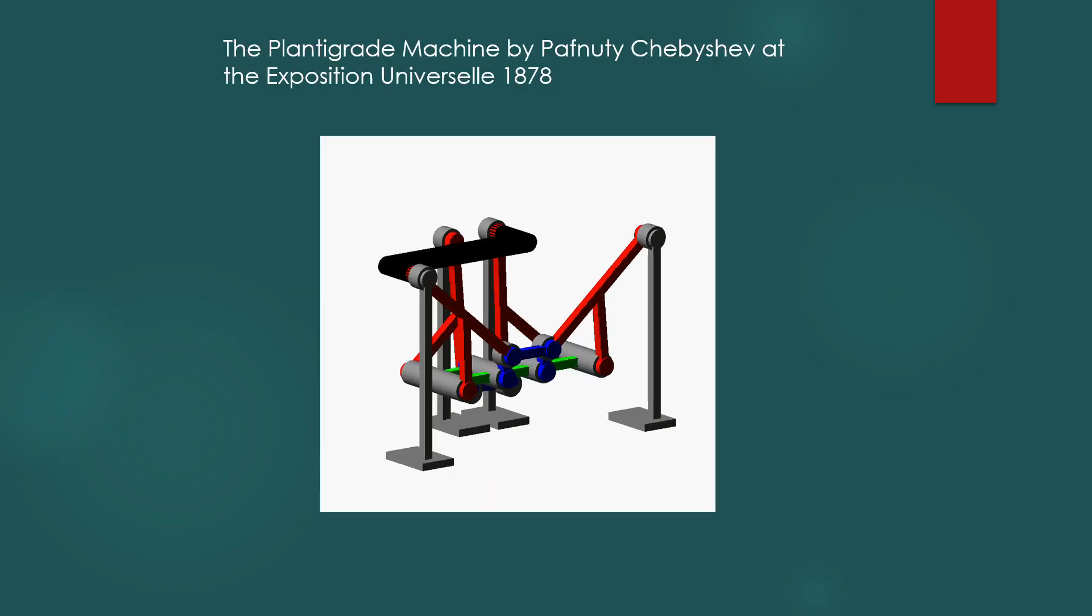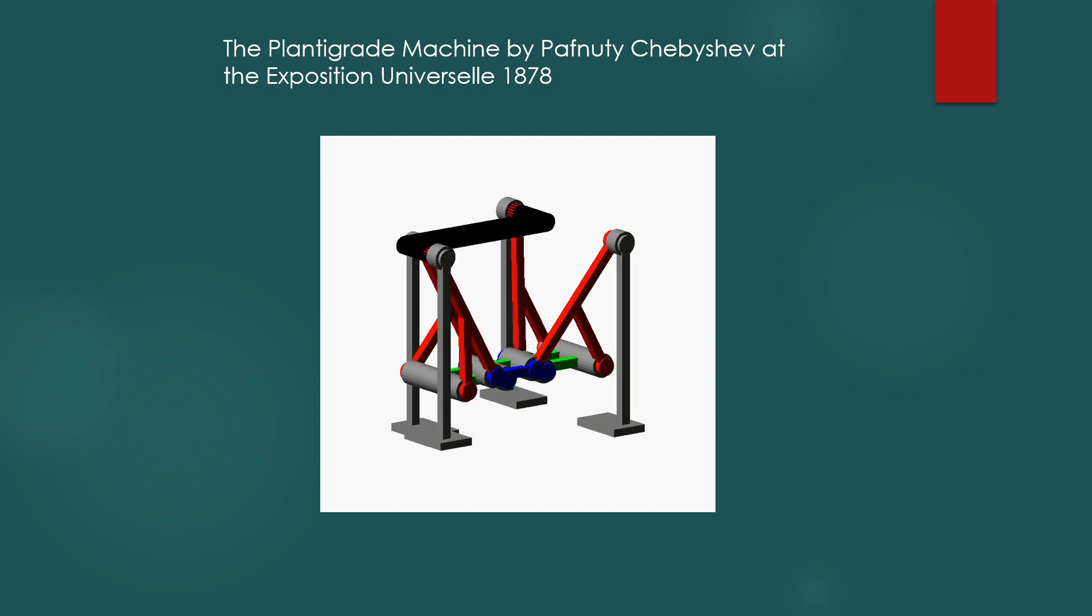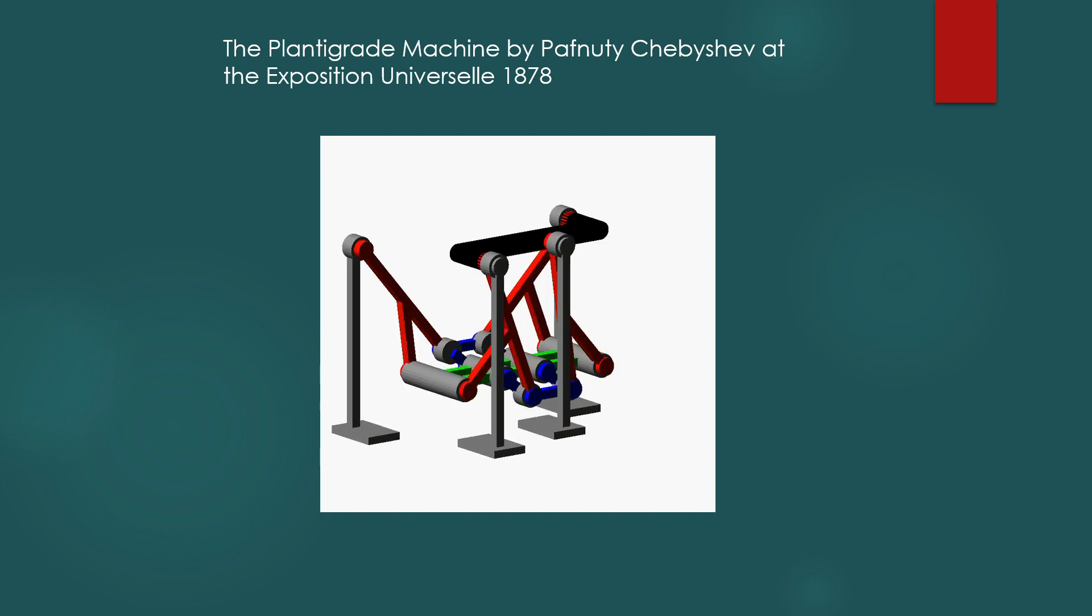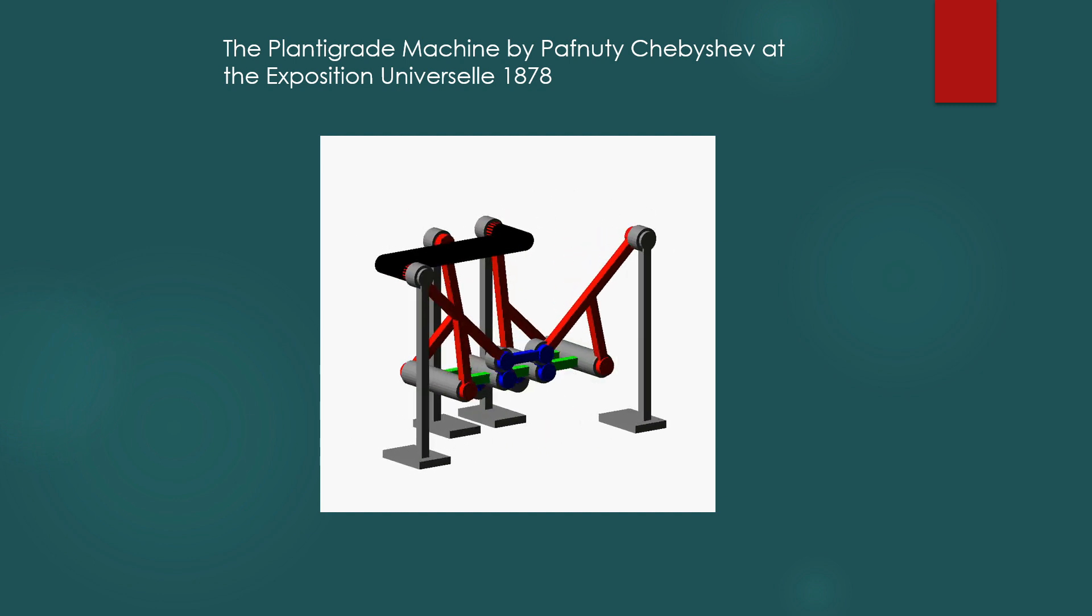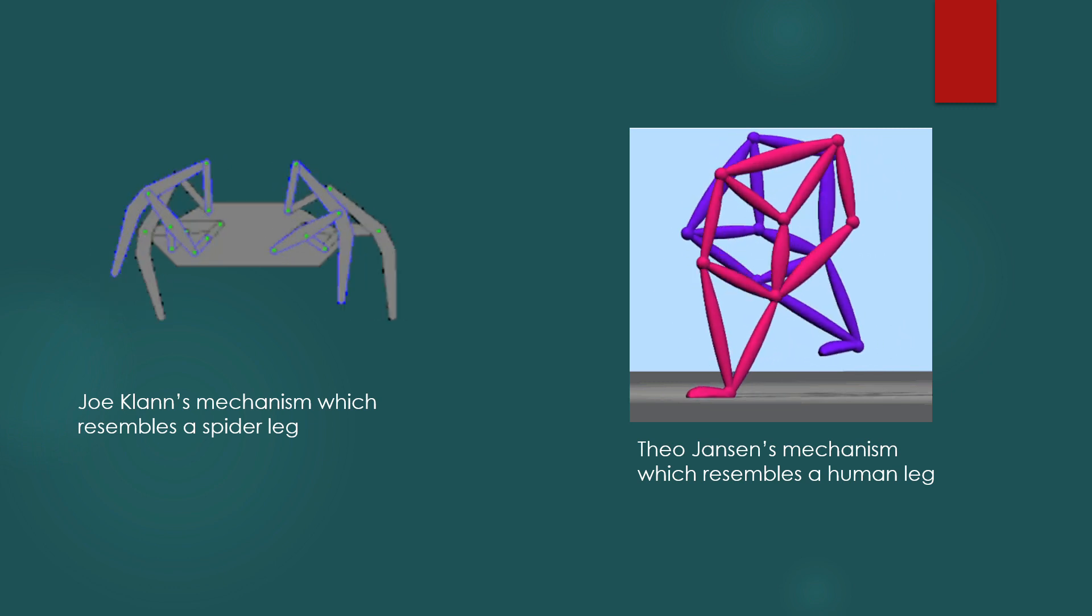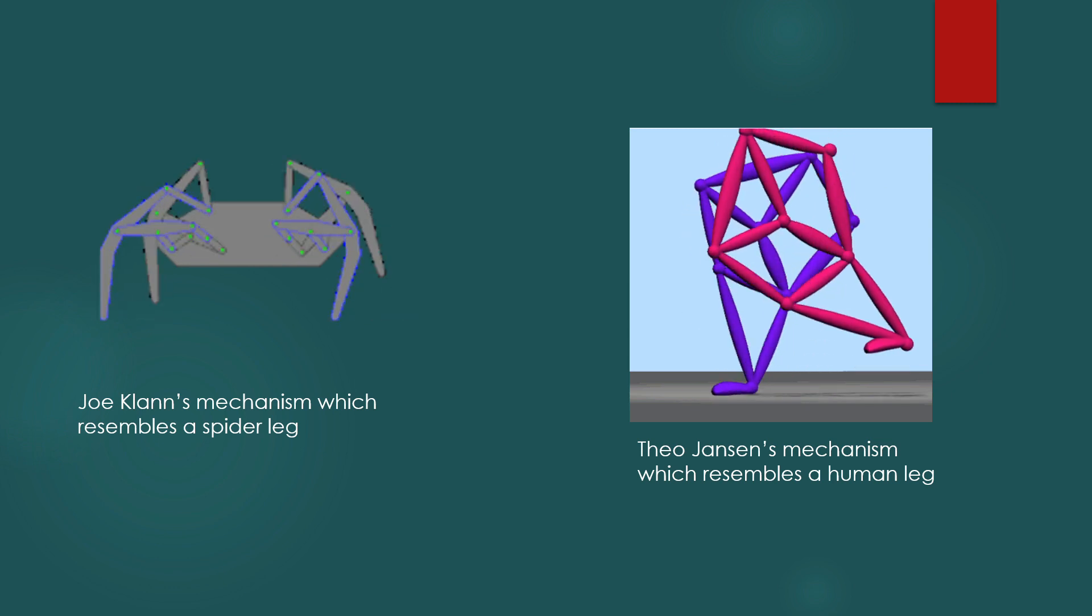An early design for a leg mechanism called the plantigrade machine by Pafnuty Chebyshev was shown at the Exposition Universelle in the year 1878. However, more effective leg mechanisms are currently Joklan's mechanism which resembles a spider leg and Theo Janssen's mechanism which resembles a human leg.